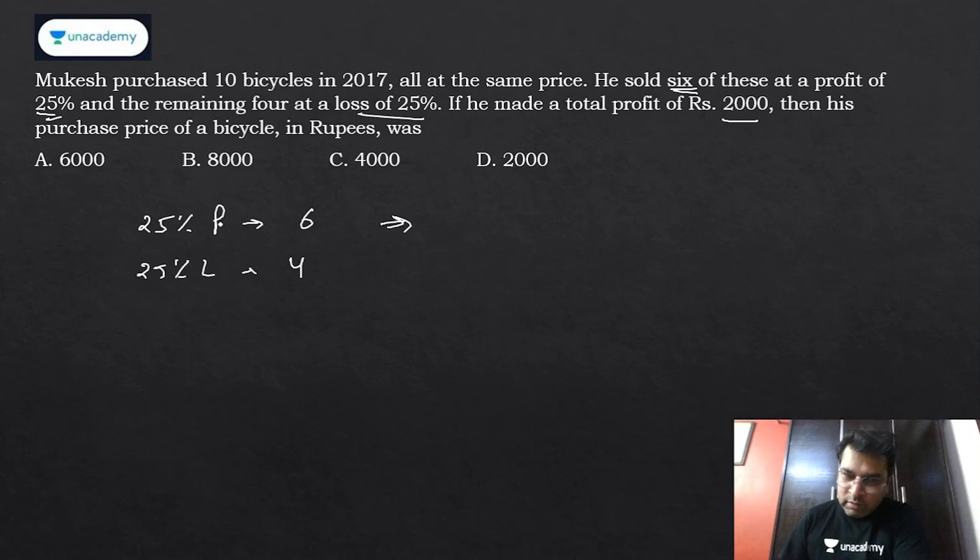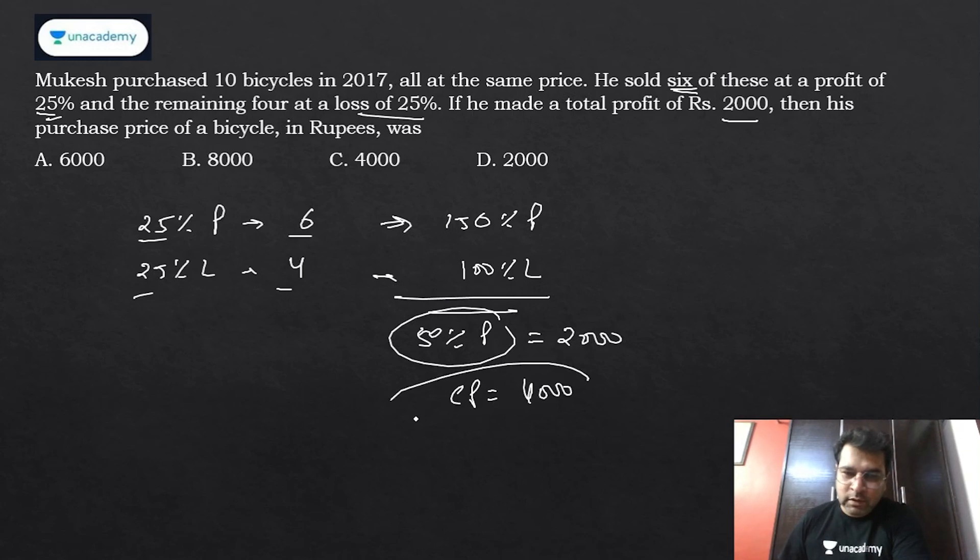If I write it: 25% weight is six gives 150 profit. 25% loss weight is four gives 100 loss. Effectively 50 profit. You can observe that all these things can be done mentally also. So in a way, 15% profit is equivalent to 2000, so obviously the cost price must have been 4000. That's your answer.